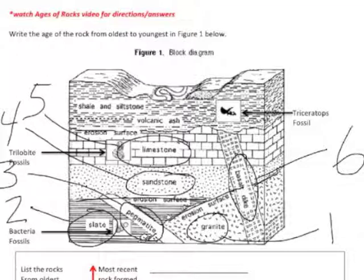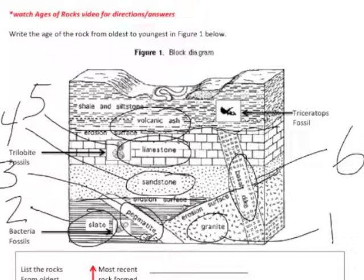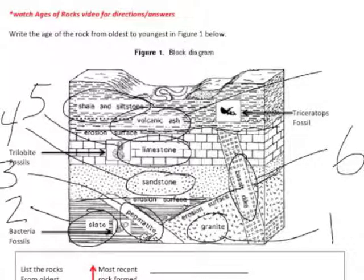And then we have another erosion surface — we're not going to write erosion surface down. Then next, again using the Law of Superposition, we have Volcanic Ash within the Shale and Siltstone. So Volcanic Ash is going to be number 7, and the Shale and Siltstone is number 8.